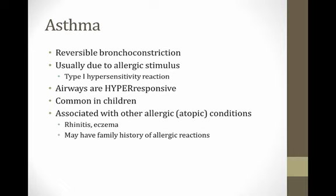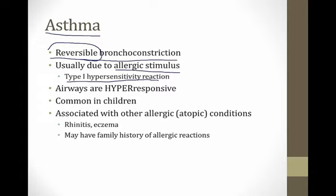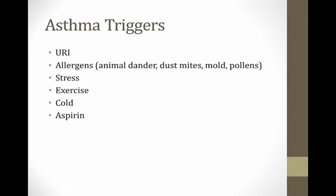The next cause of obstructive lung disease is asthma — reversible bronchoconstriction. Reversible is the key word, as opposed to COPD; this tends to go back to normal after the acute episode is over. It's usually due to some type of allergic stimulus and is an example of a type 1 hypersensitivity reaction. The airways in patients with asthma are hyper-responsive, so they overreact to stimuli and bronchoconstrict. It's common in children and is often associated with other allergic or atopic conditions like allergic rhinitis or eczema. Identifying triggers is important — if patients can avoid what triggers their bronchoconstriction, they won't get sick.